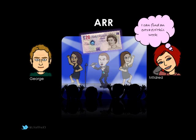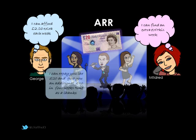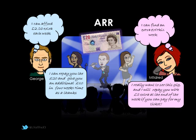Mildred realises she could give you back an extra £5 in the one week that you'd be lending the money. George isn't quite so flush and could only find an extra £2.50 — half of what Mildred can offer. However, George is borrowing the money for four weeks, so in total he'll give you back four lots of £2.50, which is £10 on top of the £20, so £30 in total. Mildred is only borrowing the money for one week, so she can only give us back £25 in total.